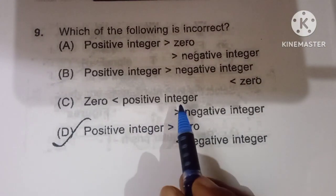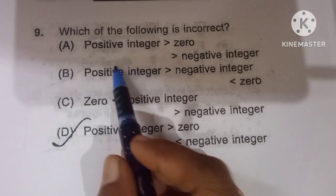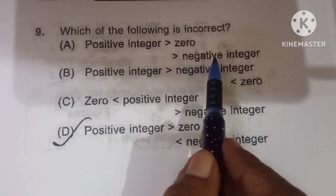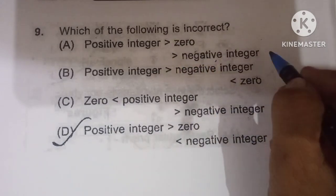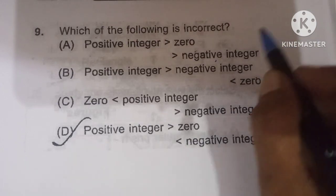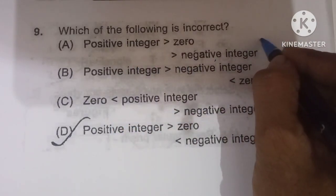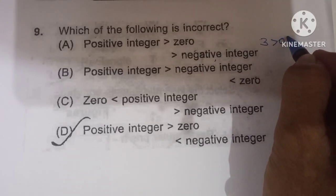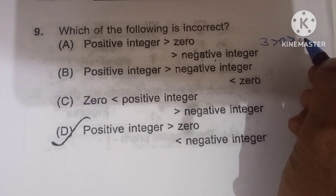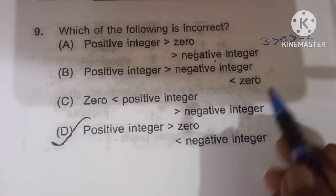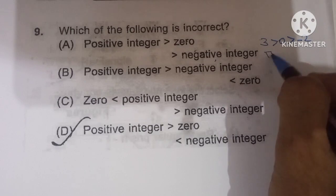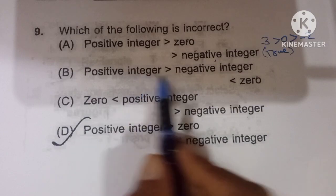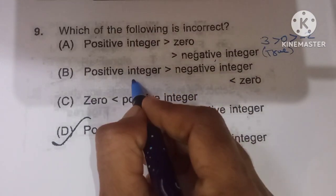Ninth question: which of the following is incorrect? Statement A: positive integer is greater than 0 and greater than any negative integer — true. For example, 3 is greater than 0 and greater than minus 2. Statement B: positive integer is greater than any negative integer — also true.